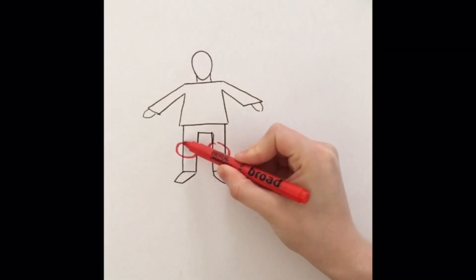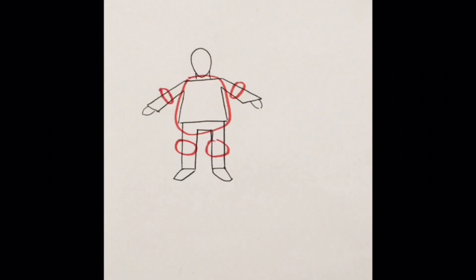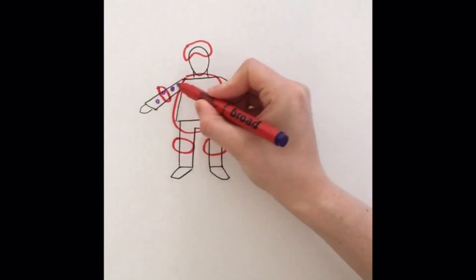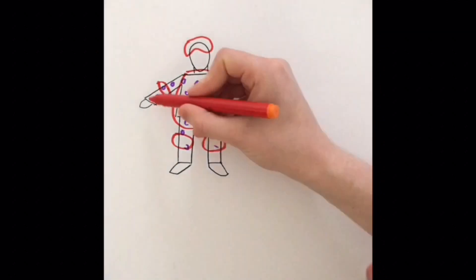In red is chronic plaque psoriasis shown over the knees, elbows, trunk and scalp. Guttate psoriasis is shown in the purple dots. This is usually found scattered over the trunk and limbs.